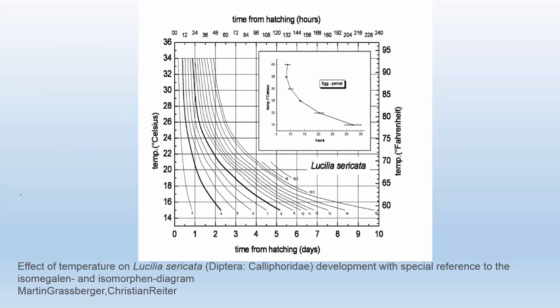So let's take a look at one of these isomegalian charts. You can see on the y-axis you have the temperature. On the x-axis you have time. For this one, the bottom is in days and the top is in hours, so you can use whichever unit you want.